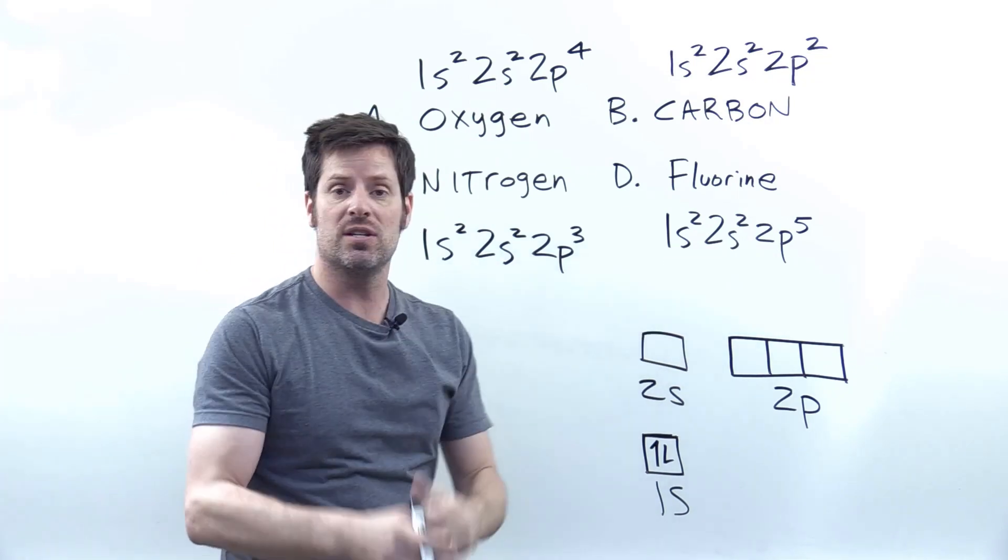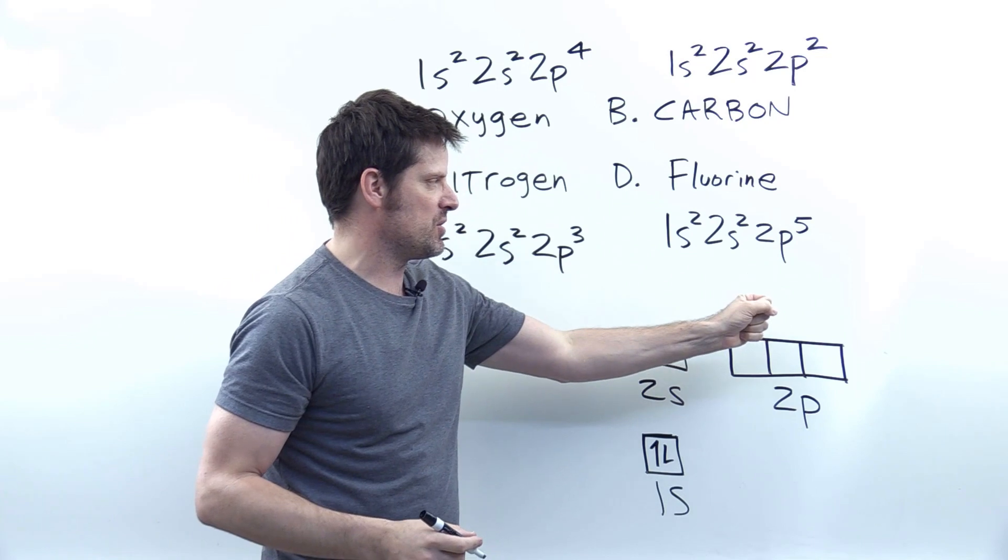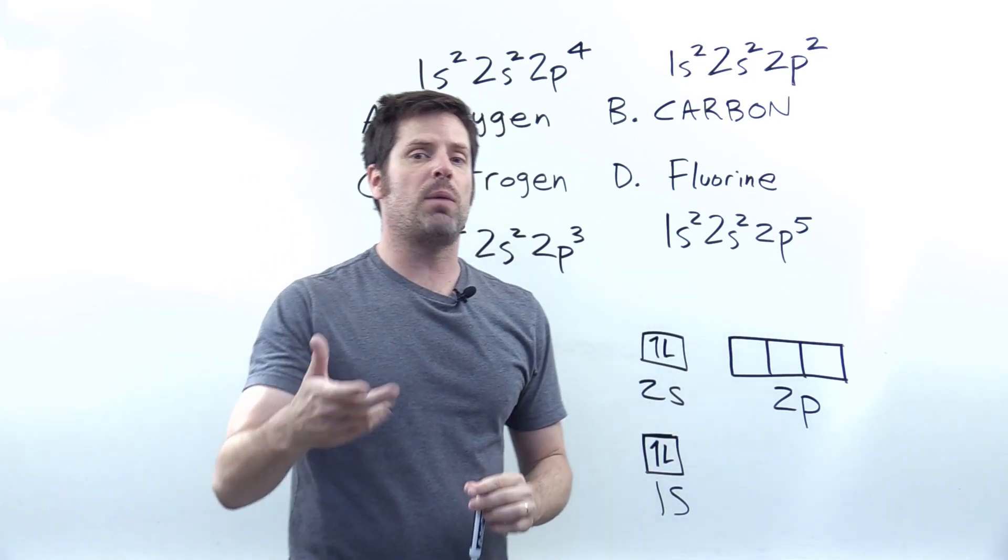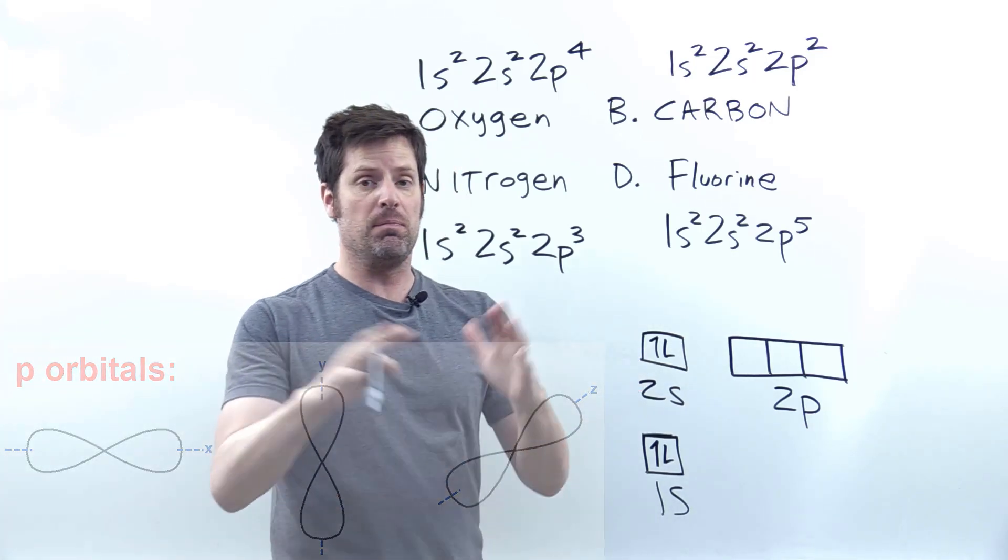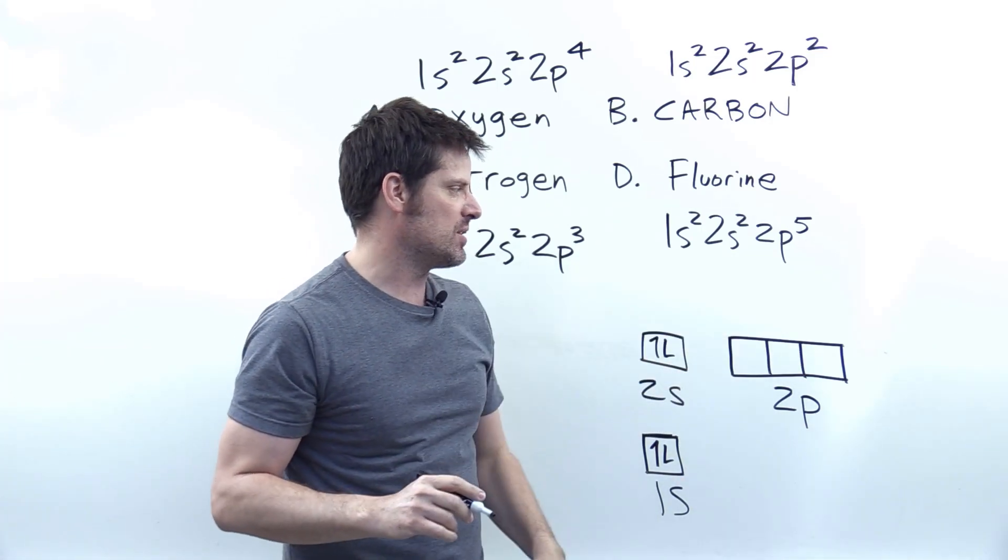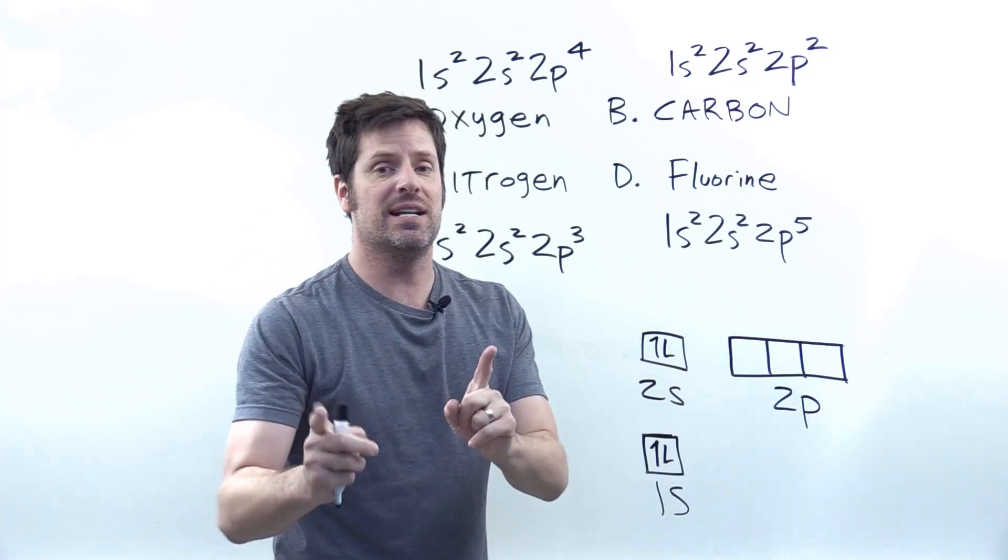For the 2s orbital, I also have two electrons, so I do the same thing in this box, which takes me now to the 2p orbitals. These three different boxes that each represent three separate p orbitals at an n equals two energy level have a combined total of five electrons. According to Hund's rule, I put those electrons in, and I do not pair them up until I have to.